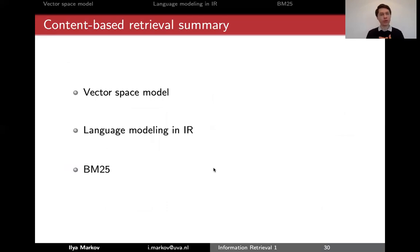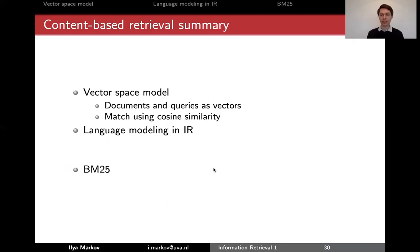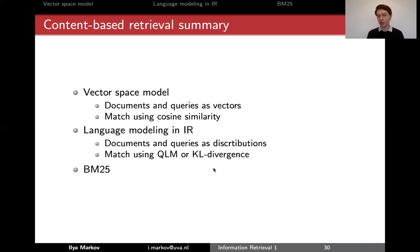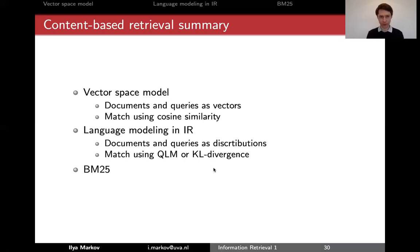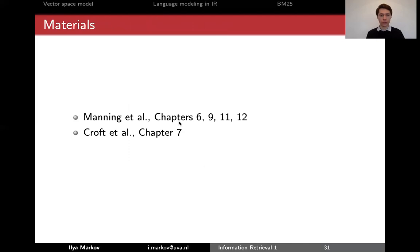To summarize term-based retrieval: we talked about the vector space model, where we represent documents and queries as vectors matched using cosine similarity. We talked about language modeling for IR, where documents and queries are represented as distributions, matched using query likelihood or Kullback-Leibler divergence. We also talked about BM25, which is neither vector nor distribution-based — it's just a well-working method. The next set of videos will be about semantic approaches to ranking and matching.